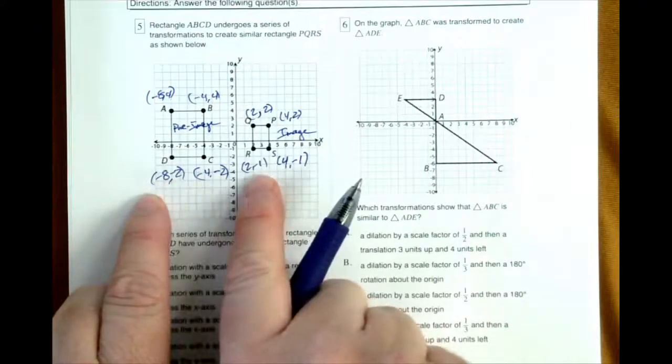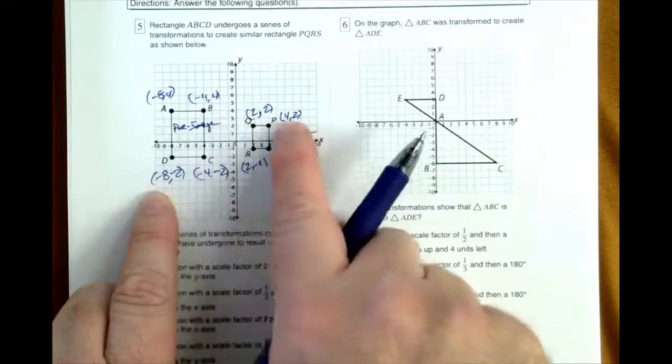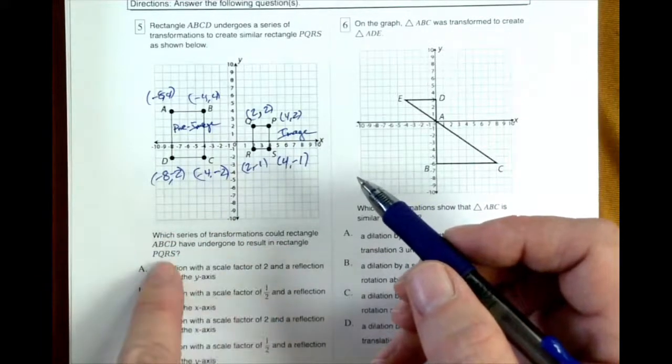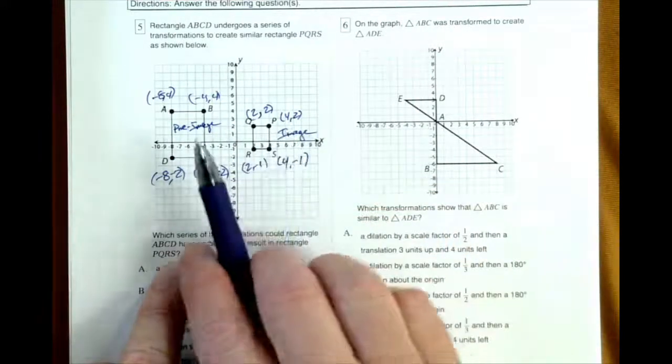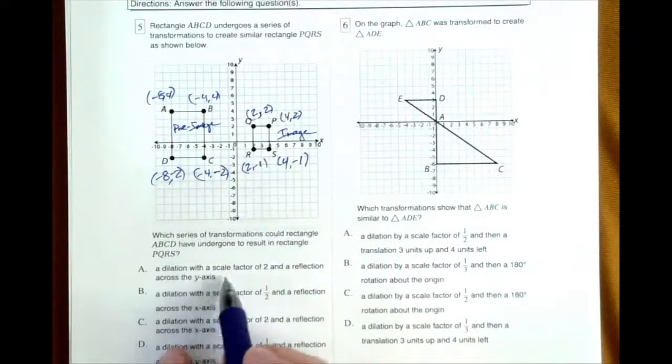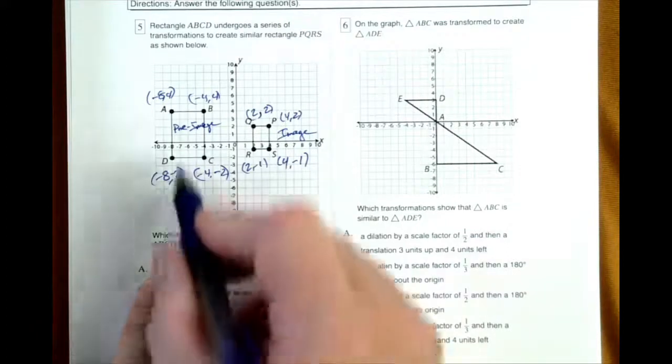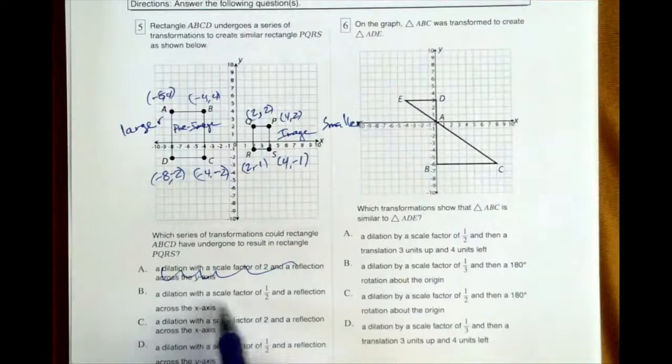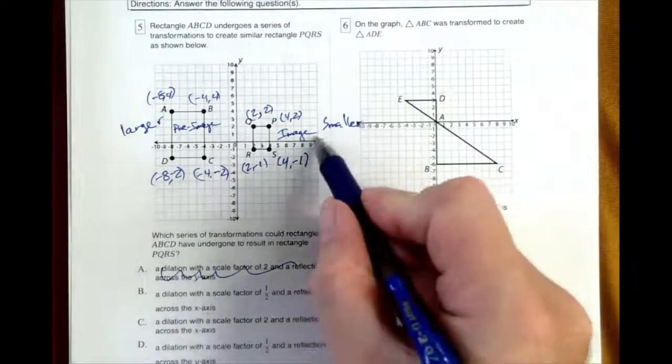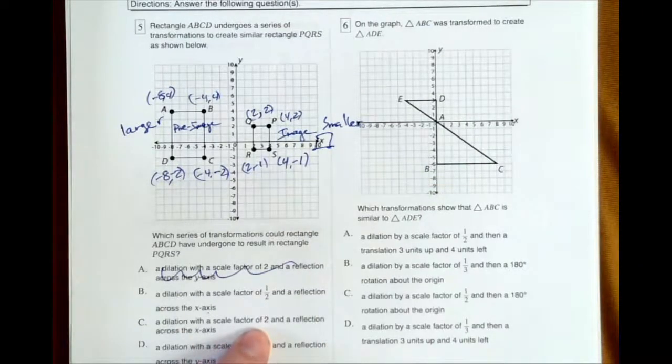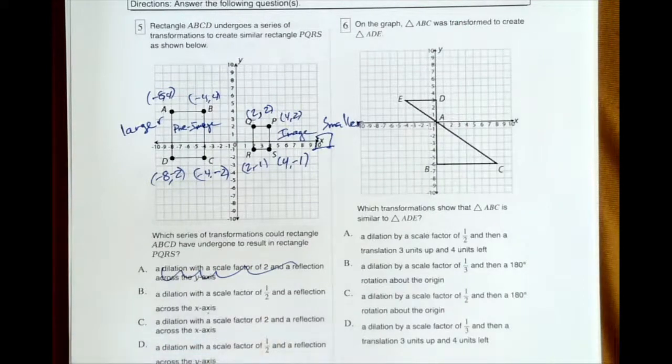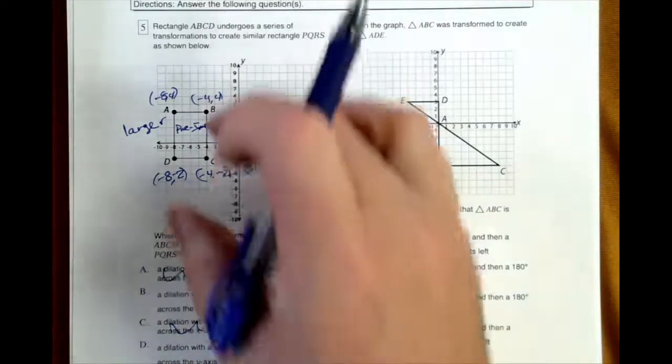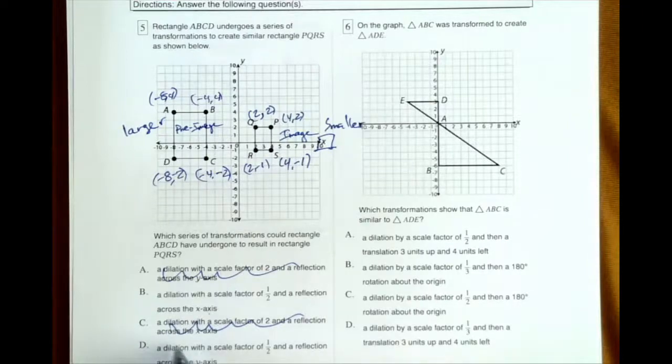So, if I look at this, how do I go from negative 8 to 2, negative 8 to 2, negative 4, which series of transformations could rectangle ABC have undergone to result in rectangle PQRS, PQRS? It looks like possibly we might be looking at a reflection here, a dilation with a scale factor of 2. Well, that won't work because we're going from the larger to the smaller. So, we can get rid of that right away. A dilation with a scale factor of a half, that works. And then maybe a reflection across the x-axis. Well, let's be careful. There's the x-axis. A dilation of a scale factor of 2 and a reflection across the x-axis. Well, we already looked at that and said the scale factor, it's getting smaller. So, it's one of these two. This looks like the dilation. We can shrink it by a half and then reflect it across the y-axis. So, that would be the only one that made sense here.